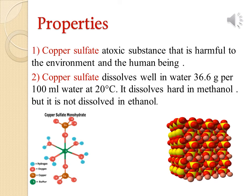Properties: First, copper sulfate is a toxic substance that is harmful to the environment and to human beings. Second, copper sulfate dissolves well in water — 63.6 g per 100 ml of water at 20°C. It dissolves with difficulty in water but is not dissolved in ethanol or methanol.